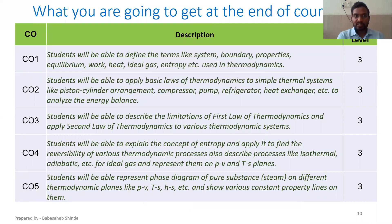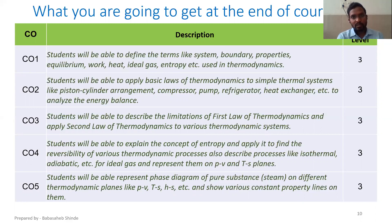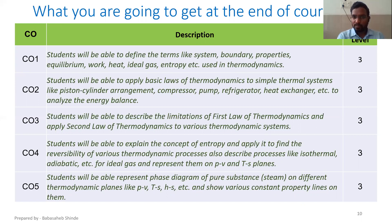Now, an important thing — the course outcomes, what you are going to get at the end of this course and why you are studying it. You might have heard about Bloom's taxonomy, NBA program outcomes, and graduate attributes defined by the Washington Accord. If you have heard about those things you can relate the course outcomes easily. If not, I suggest you take a look at those things at least once — it will be quite helpful.